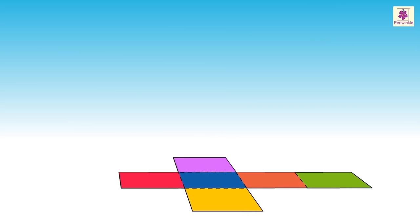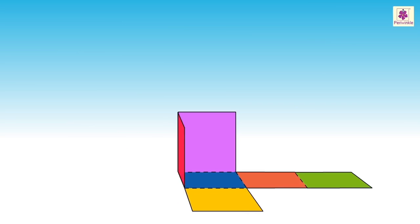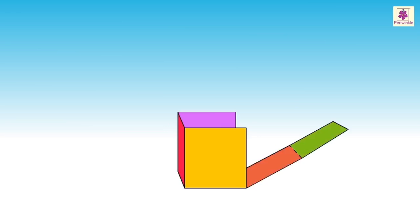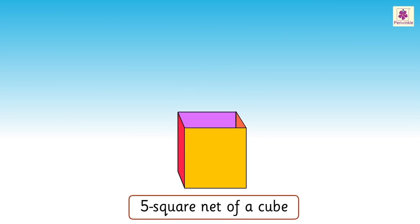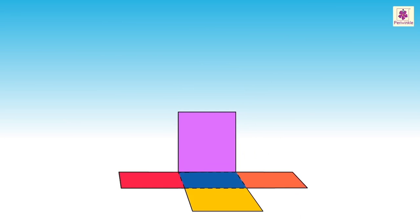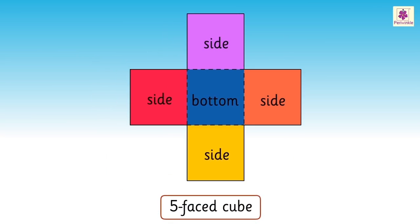When we fold these squares along the dotted lines, we get a cube. Now, remove the top part — we get a five-square net. It forms an open box. It is a five-faced cube.